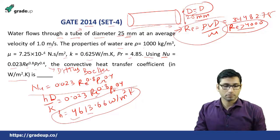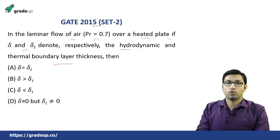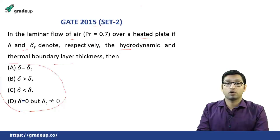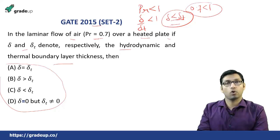Next question from GATE 2015 Set 2. In this question, for the laminar flow of air with Prandtl number 0.7 over a heated plate, if δ and δT denote the hydrodynamic and thermal boundary layer thickness, you have to determine which relation is true. Since Prandtl number is less than 1 (it is 0.7), we know that δ/δT < 1, meaning δ < δT. Therefore option C is the correct answer.